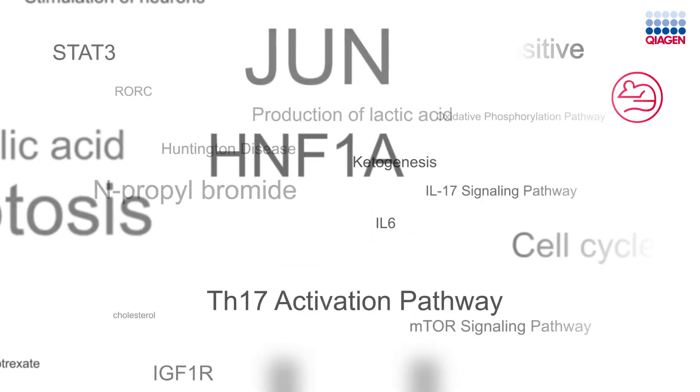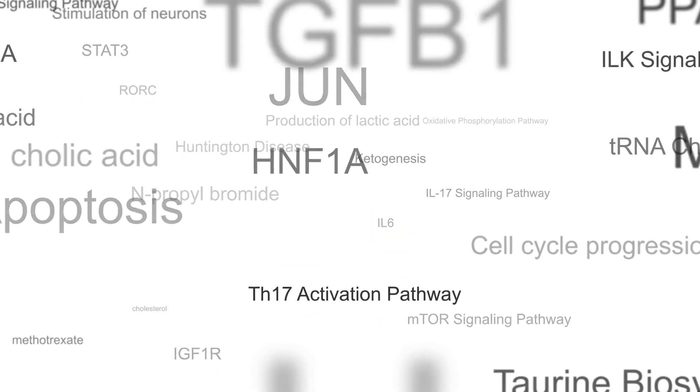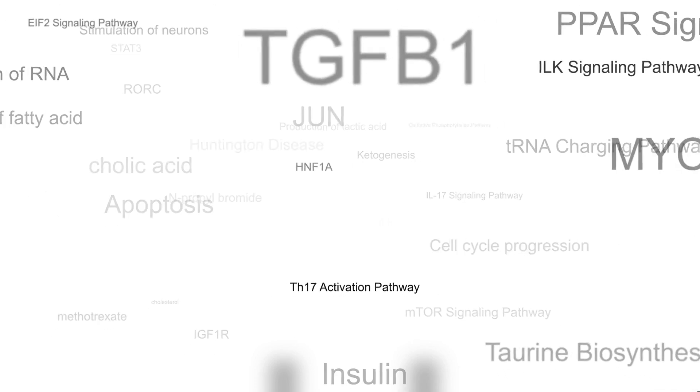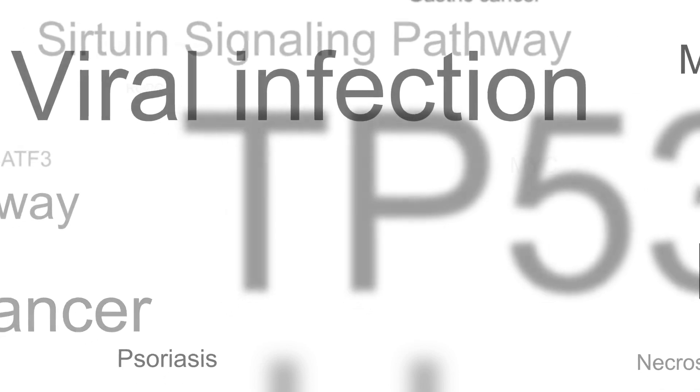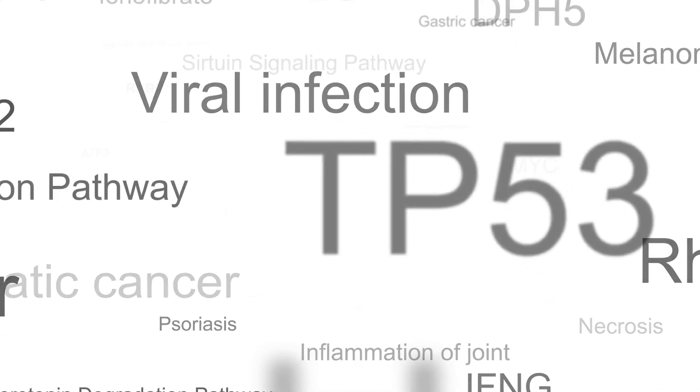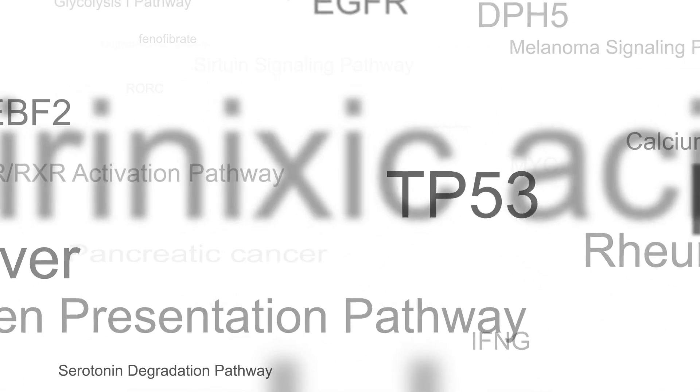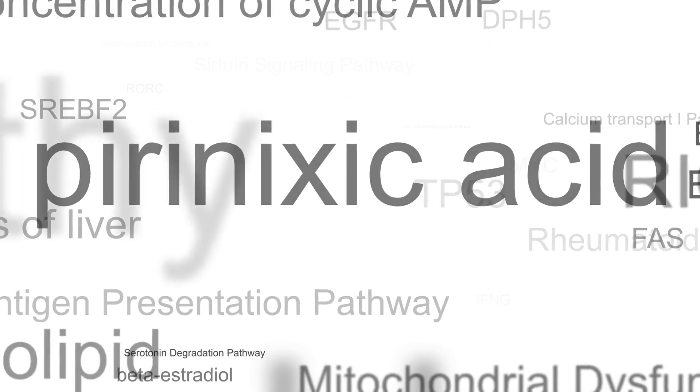However, the p-value is really only valid for one test. What happens if you want to test more than one hypothesis at a time? What happens when you want to test hundreds or thousands of hypotheses? This becomes a lot more complicated. The more tests you perform, the greater your chances of finding false positives.